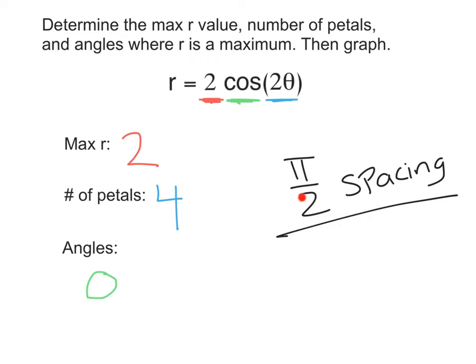Okay, we are almost there. We know that we have a pi over two spacing. We've got four petals, and we start at zero. Well, if we start at zero, we know our next petal is going to be maximum value at zero plus pi over two. In this case, that's going to just be pi over two, of course.